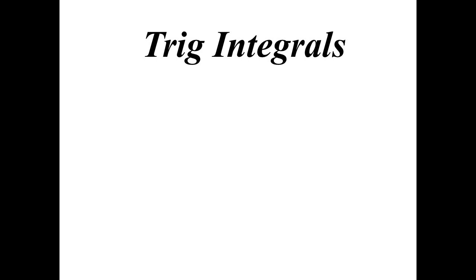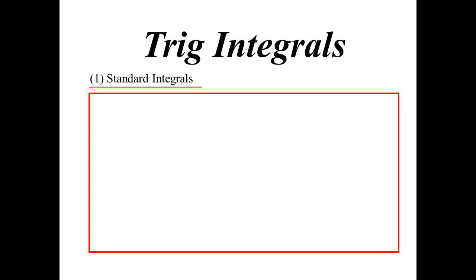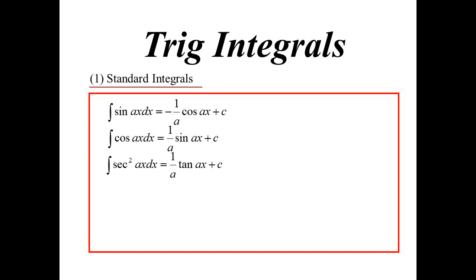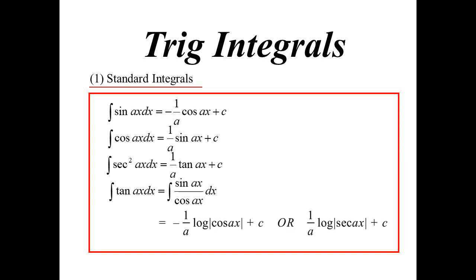Let's now look at techniques for our different trig integrals and how we handle them. We have our standard ones to start off with. Sine obviously goes to minus cos, cos goes to sine, sec squared goes to tan. The tan one comes from sine over cos, so we get the log situation — log of sec, or negative log of cos.